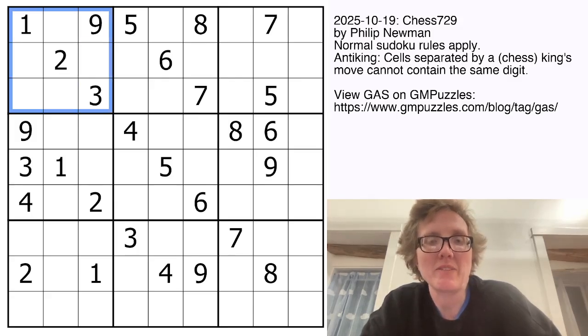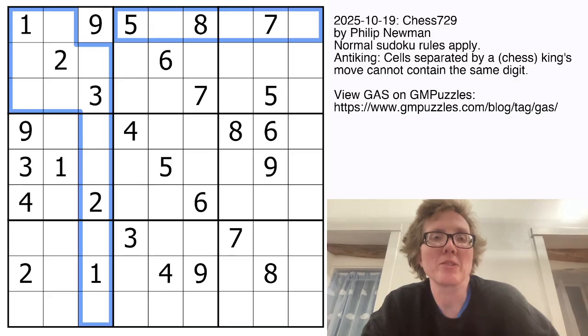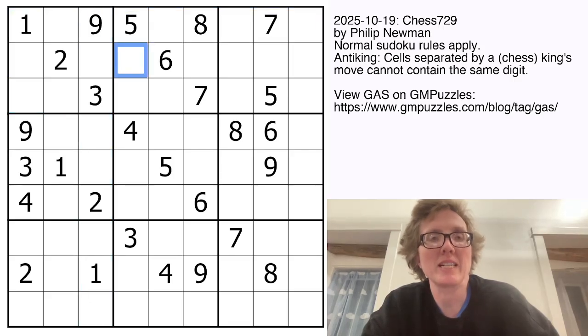And in addition to that, we have an anti-king rule, and that just means that digits that are the same can't touch each other diagonally. So, for example, because this is a 9, normal sudoku rules say none of these cells that it sees can be 9, but also the anti-king rule says that this cell, which touches it diagonally, cannot be a 9. Or because this is a 7, these also can't be 7s in addition to the normal sudoku rules.